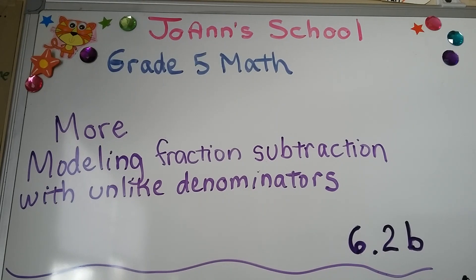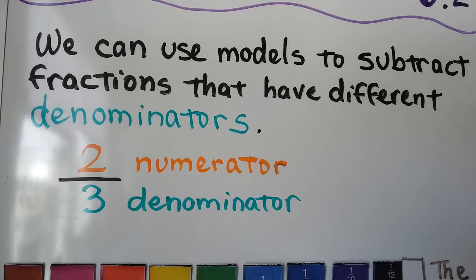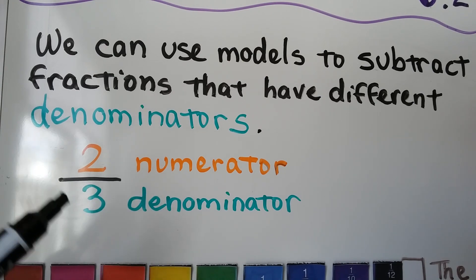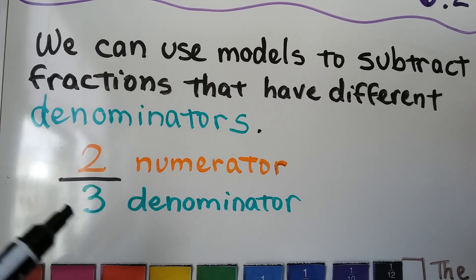This is more modeling fraction subtraction with unlike denominators. We're at 6.2b. 6.2a is linked in the description. Just like we did with addition, we can use models to subtract fractions that have different denominators. The top number is the numerator, we have a fraction bar, and the bottom number is the denominator.